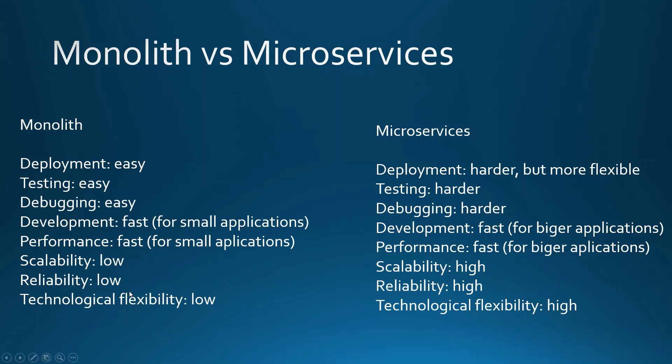If there is an error inside the process the whole application usually goes down, but for microservices the reliability is higher because if one microservice goes down, this doesn't necessarily mean that the whole application is down.